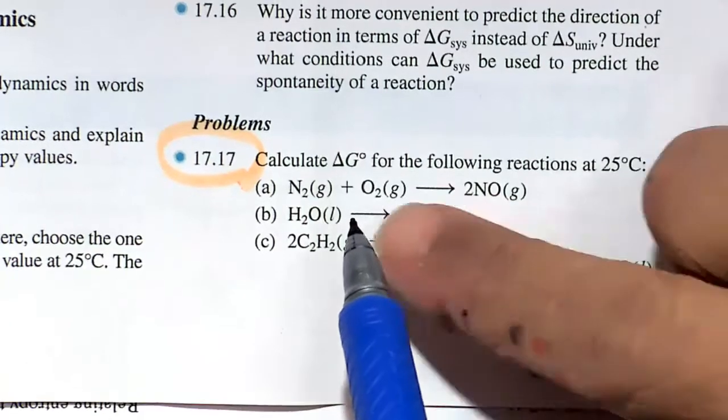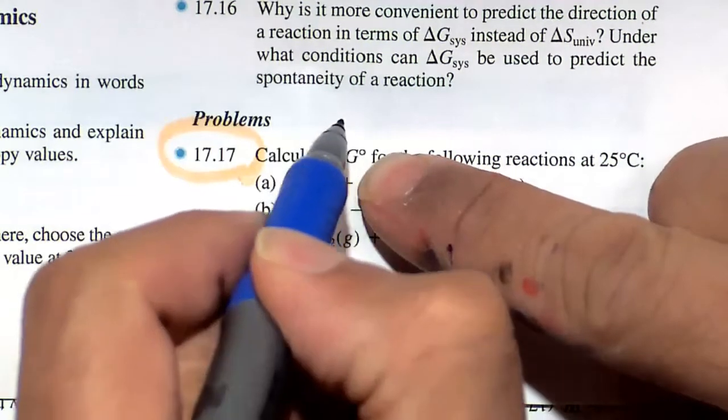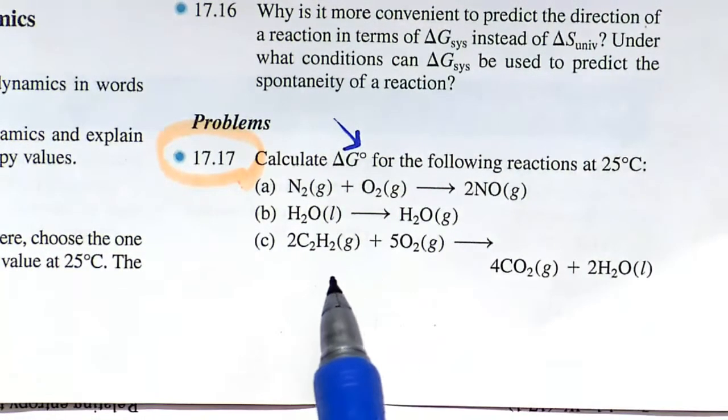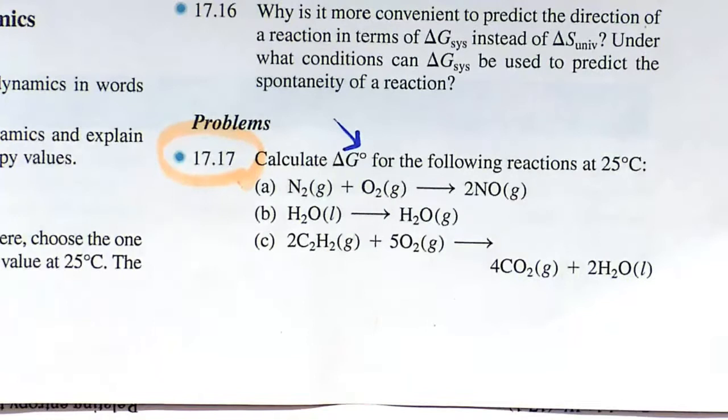In this video we have to calculate the standard free energy change in standard state. That little symbol means not, which represents a very specific set of conditions known as standard state, which is 25 degrees C and 1 molar, or 1 atmosphere when dealing with a gas.